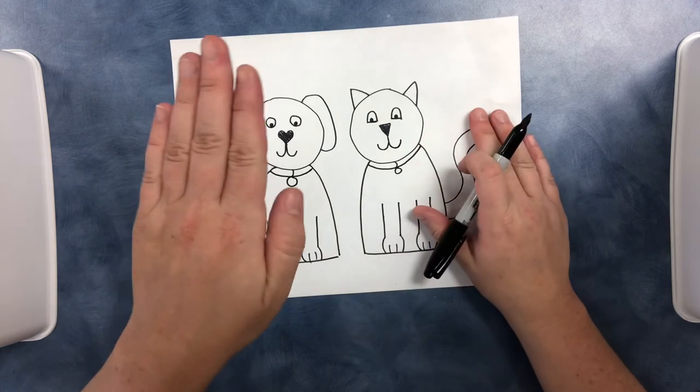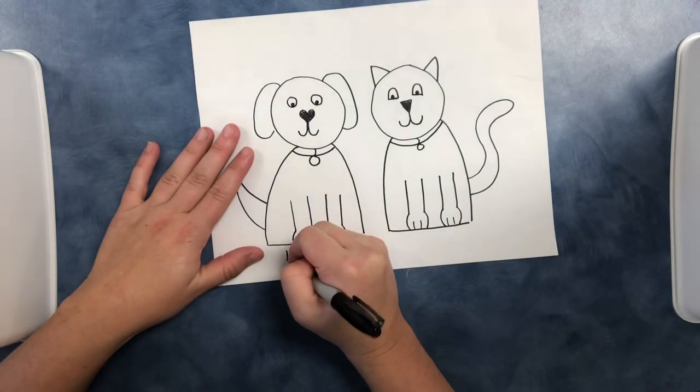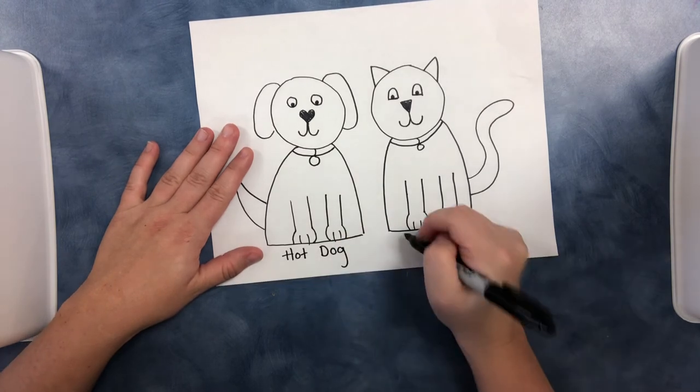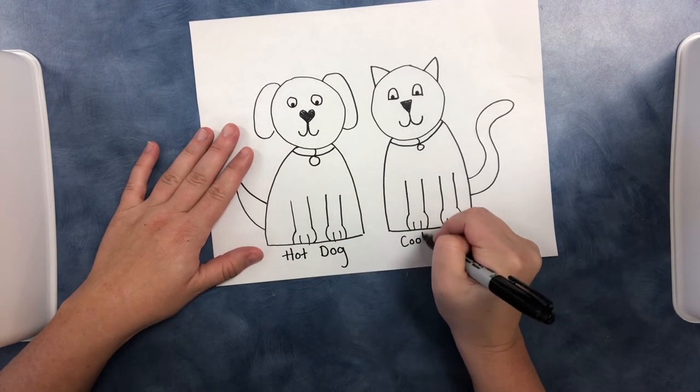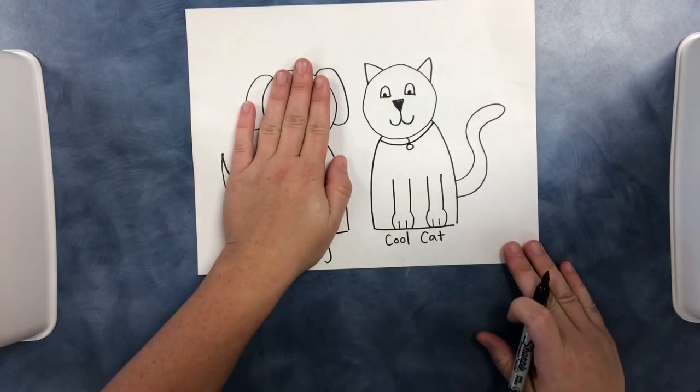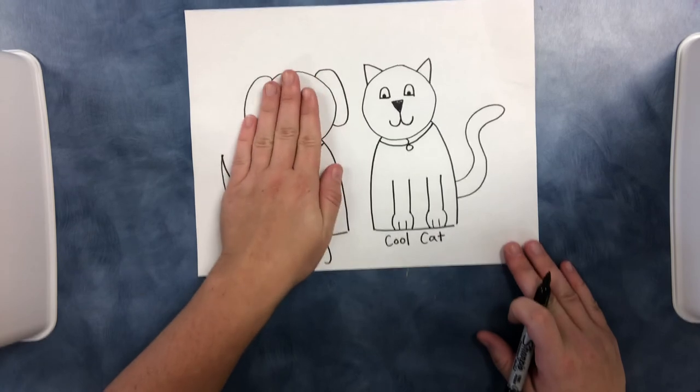All right, we're going to color the dog with hot colors, so those are our fire colors. So we've got our hot dog and we've got our cool cat. We want to use the fire colors, the colors that make us feel hot like red, orange, yellow, pink.